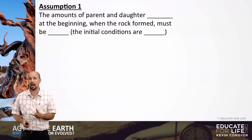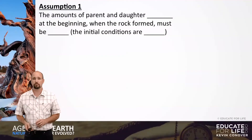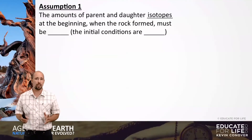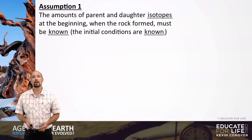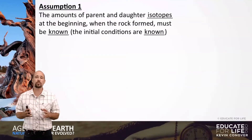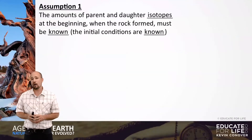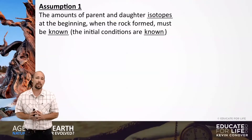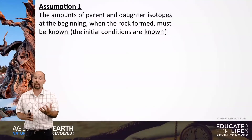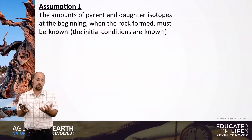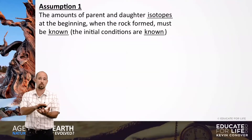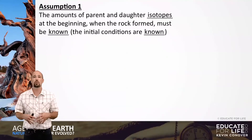Remember the three assumptions we talked about with the hourglass? Assumption one: the amounts of parent and daughter isotopes at the beginning, when the rock formed, must be known — you have to know your initial conditions. How much sand was in the top of the hourglass when it started running? The problem is you don't know what the initial conditions were. A rock may have a lot or a little of the parent or daughter isotope. You don't know.